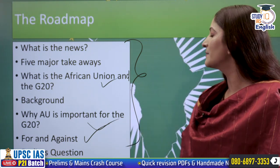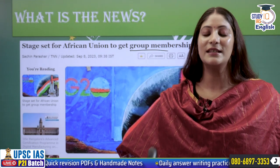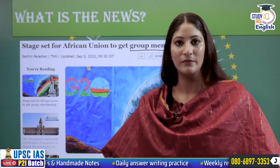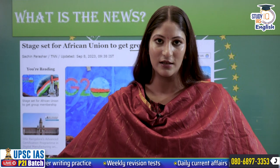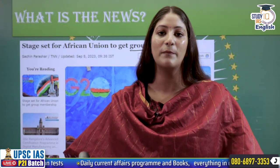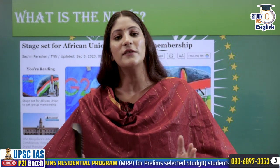Moving ahead with the news: the stage has been set for the admission of the African Union as a permanent member of the G20. The centrality of the African Union lies in its growing GDP and the humongous population it hosts. South Africa is already a member of the G20, but South Africa may have its own economic aims, ambitions, and domestic policies which it may not be able to represent at the African continent level. South Africa is bearing the huge responsibility of representing the second largest continent in the world. So if the European Union can be a part of the G20, why can't the African Union?